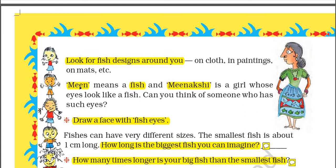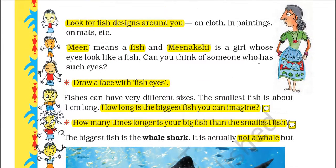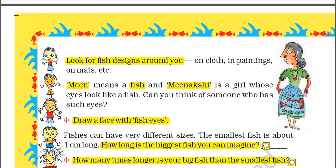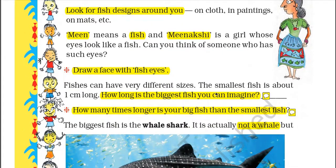Meen and Meenakshi — both of these are Hindi words. Meen means fish, and Meenakshi is a girl whose eyes look like a fish. Can you think of someone who has such eyes? Probably you can find someone in your surroundings who has eyes like a fish. This woman has eyes just like a fish — you can draw her as Meenakshi.